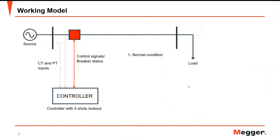To simplify the basic operation of a recloser, we have an example here: a circuit with a source and a load connected to the breaker. This breaker has a controller which serves as the brain of the breaker and gives a decision on when to trip the breaker. This link sends information of current and voltage on the line, and the breaker status — whether it is open or closed. Let's say this breaker controller is programmed to perform a four-shot lockout.